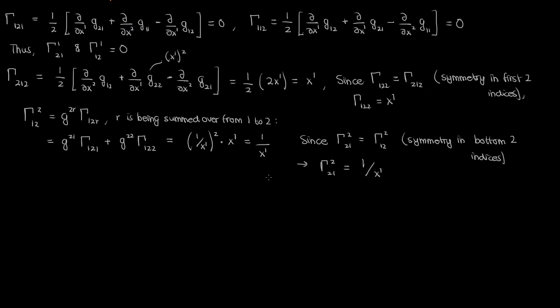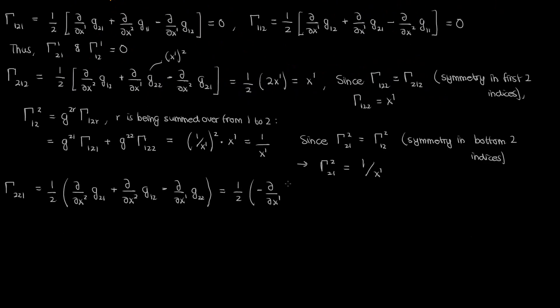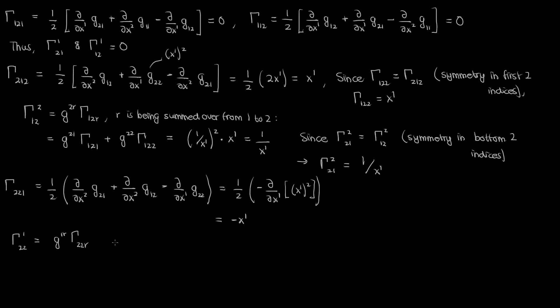The last first kind symbol is gamma sub 2, 2, 1: the first two terms cancel, and we're left with half the negative partial of (x super 1)², giving negative x super 1. The last second kind symbol is gamma super 1 sub 2, 2: expanding the right-hand side and plugging in the relevant values, we end up with negative x super 1.